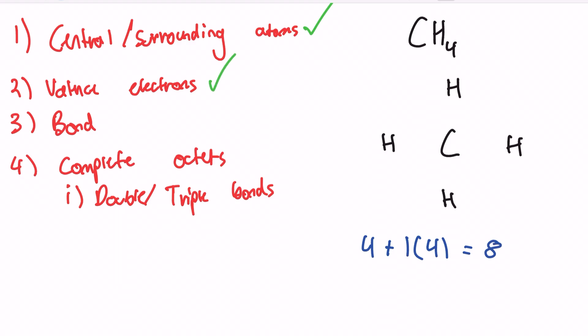For step three, we will draw a single bond connecting each one of these atoms. Every time we draw a bond, we need to realize that this is a shared pair of electrons, which contains two electrons. So we need to subtract two electrons from our total valence electron count. We would be subtracting two four times, which gives us a final answer of zero.